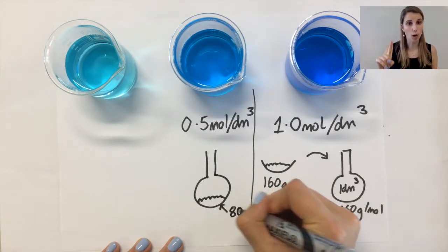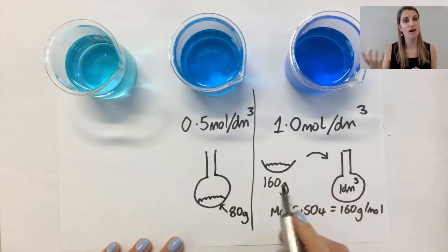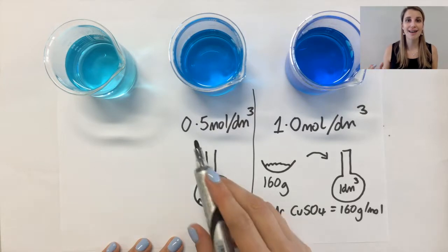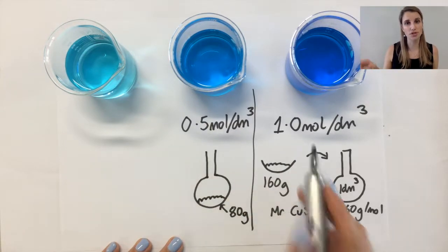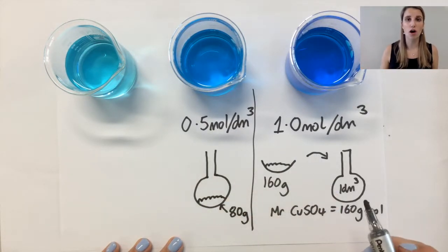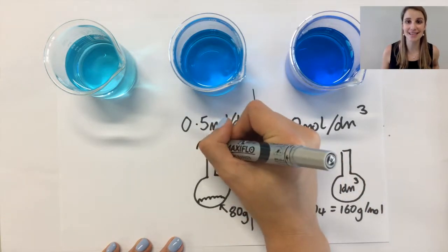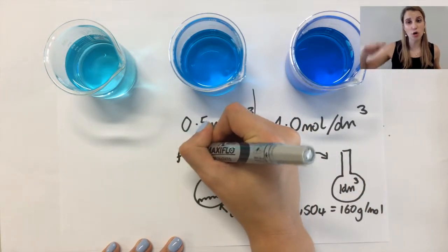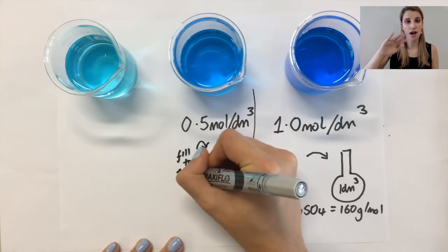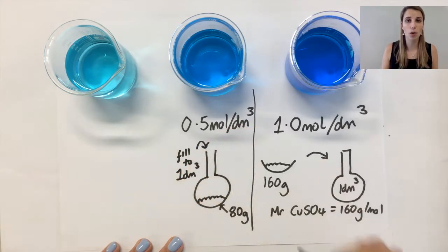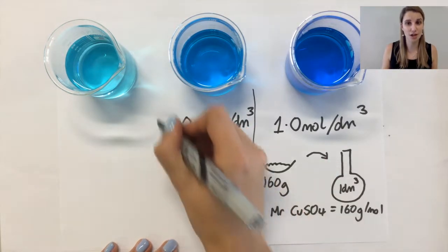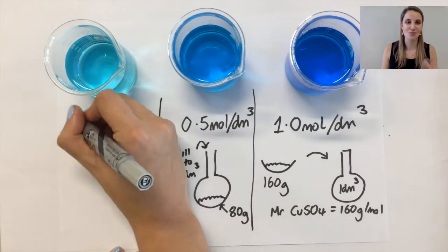So now instead of one mole of copper sulphate, which weighs 160 grams, I now need half a mole of copper sulphate. So half a mole of your copper sulphate weighs 80 grams. If I dissolve that up to one decimetre cubed, I've got my half mole per decimetre cubed solution of copper sulphate.